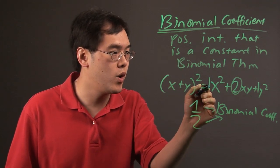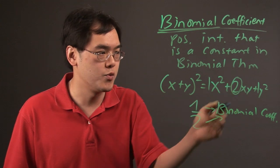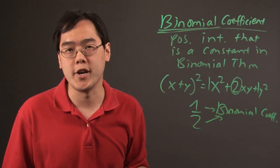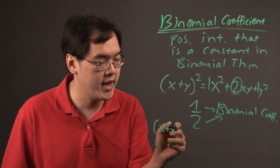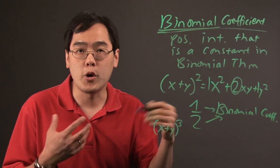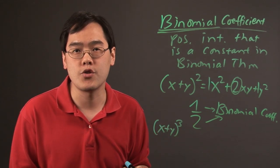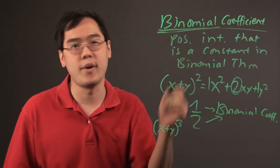So in this particular scenario, one, two, and one - one's a repeat obviously - those are examples of binomial coefficients. So if you multiply, for example, x plus y to the third, multiply, combine your like terms, the numbers that are in front would be your binomial coefficients.